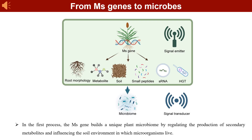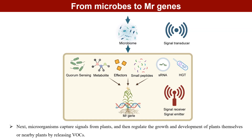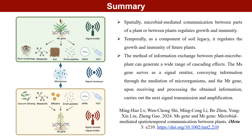In the first process, the MS gene builds a unique plant microbiome by regulating the production of secondary metabolites and influencing the soil environment in which microorganisms live. Next, microorganisms capture signals from plants and then regulate the growth and development of plants themselves or nearby plants by releasing VOCs. Spatially, microbial-mediated communication between parts of a plant or between plants regulates growth and immunity.